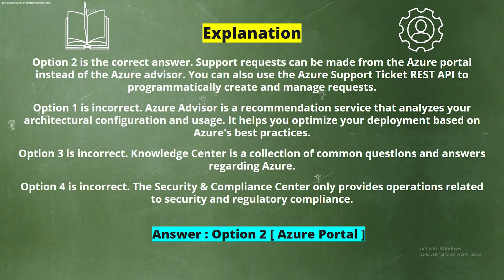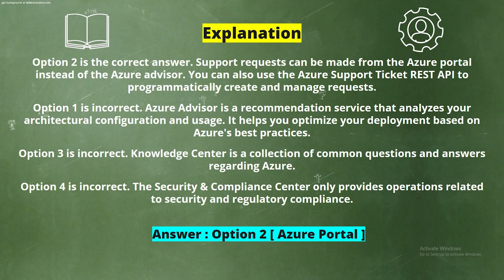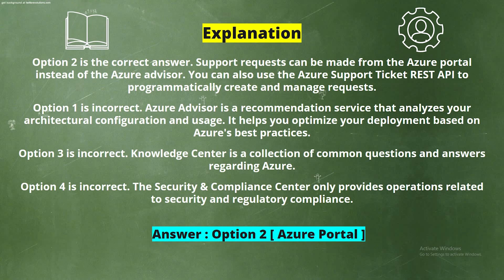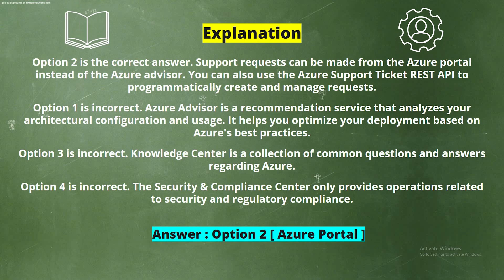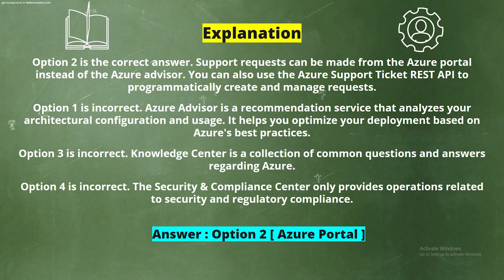Explanation: Option 2 is correct. Support requests can be made from the Azure Portal. You can also use the Azure Support Ticket REST API to programmatically create and manage requests. Option 1 is incorrect — Azure Advisor is a recommendation service that analyzes your architectural configuration and usage to optimize deployment based on Azure best practices. Option 3 is incorrect — Knowledge Center is a collection of common questions and answers about Azure. Option 4 is incorrect — the Security and Compliance Center only provides operations related to security and regulatory compliance.